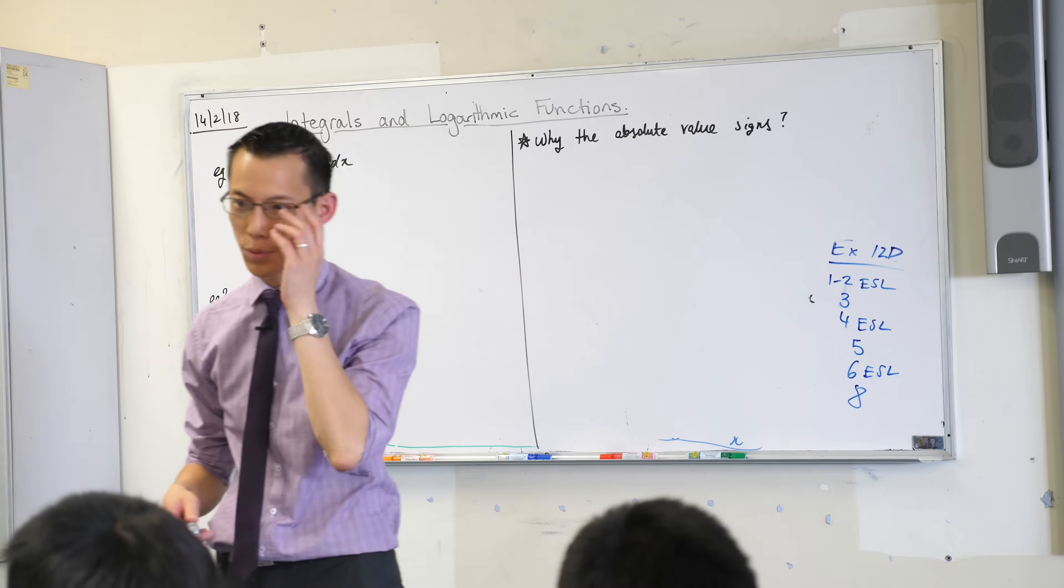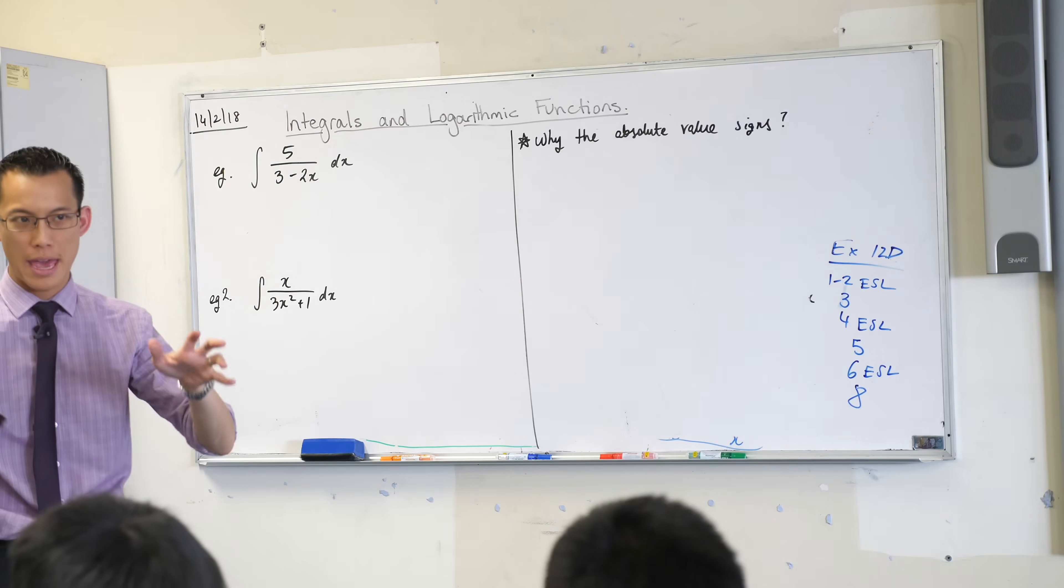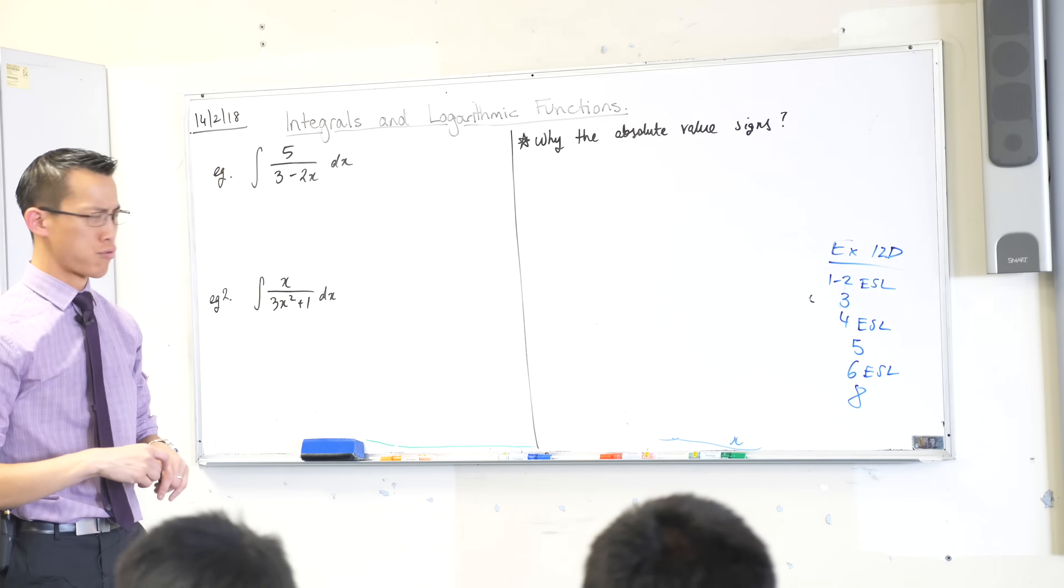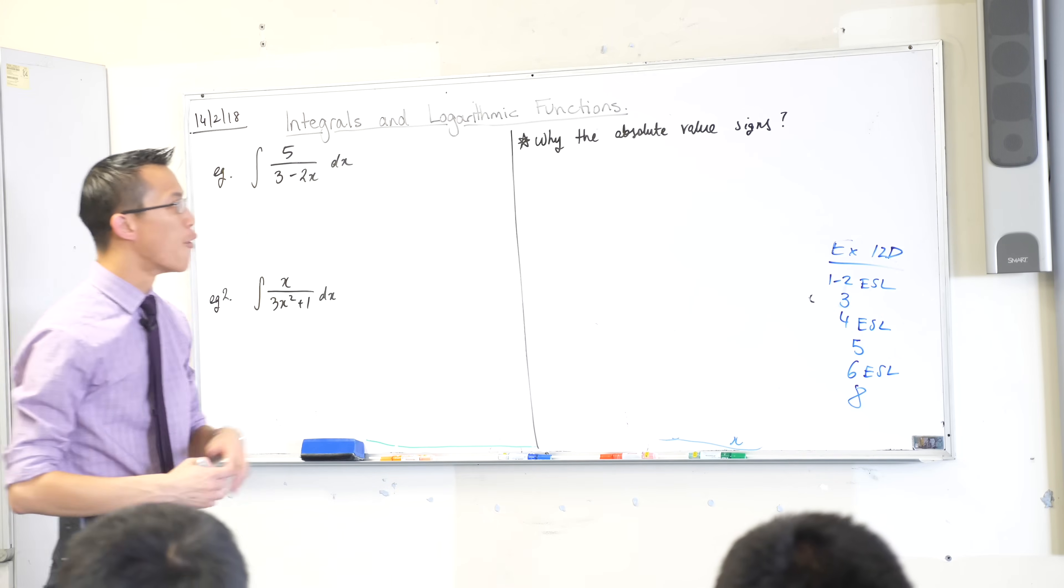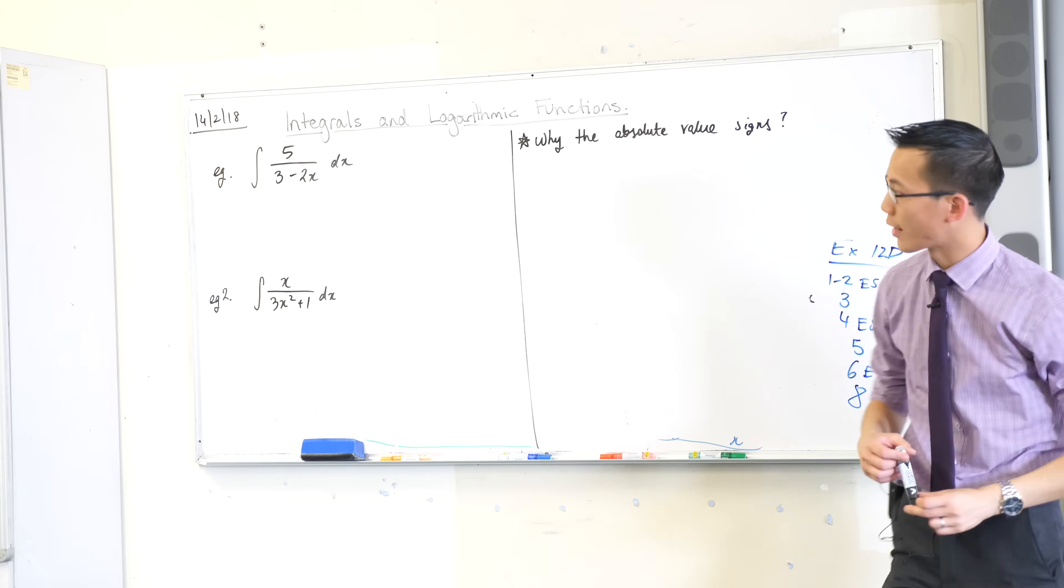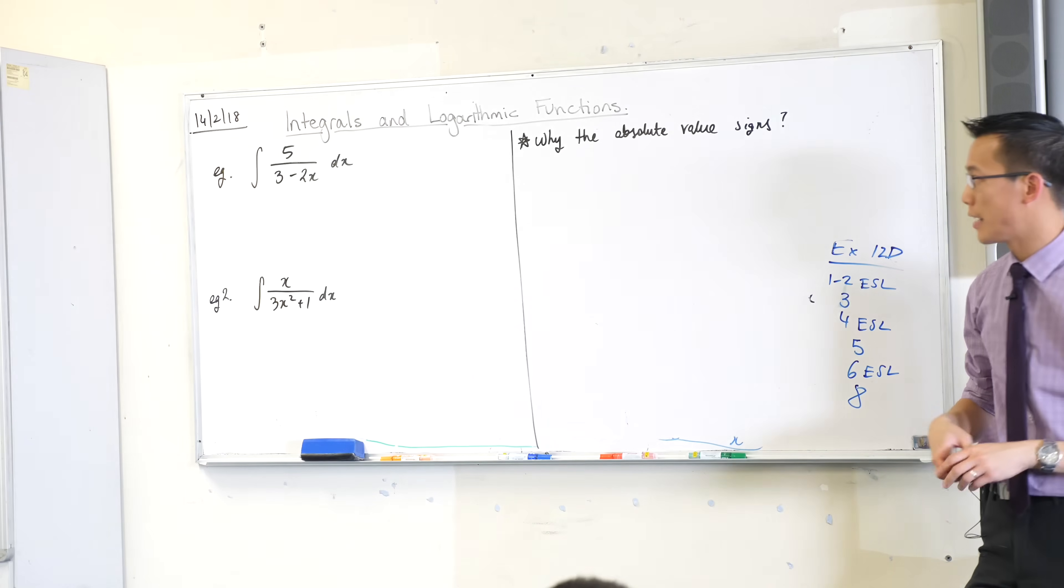I'm going to do two quick examples with you just to make sure you're on the right page, and then I'm going to give you my final proper rigorous explanation for why on earth these absolute value signs appear in our mystery integral.